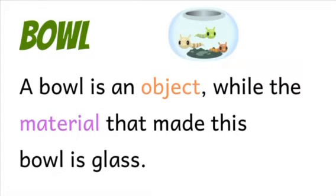3. Bowl. A bowl is an object, while the material that made this bowl is glass.